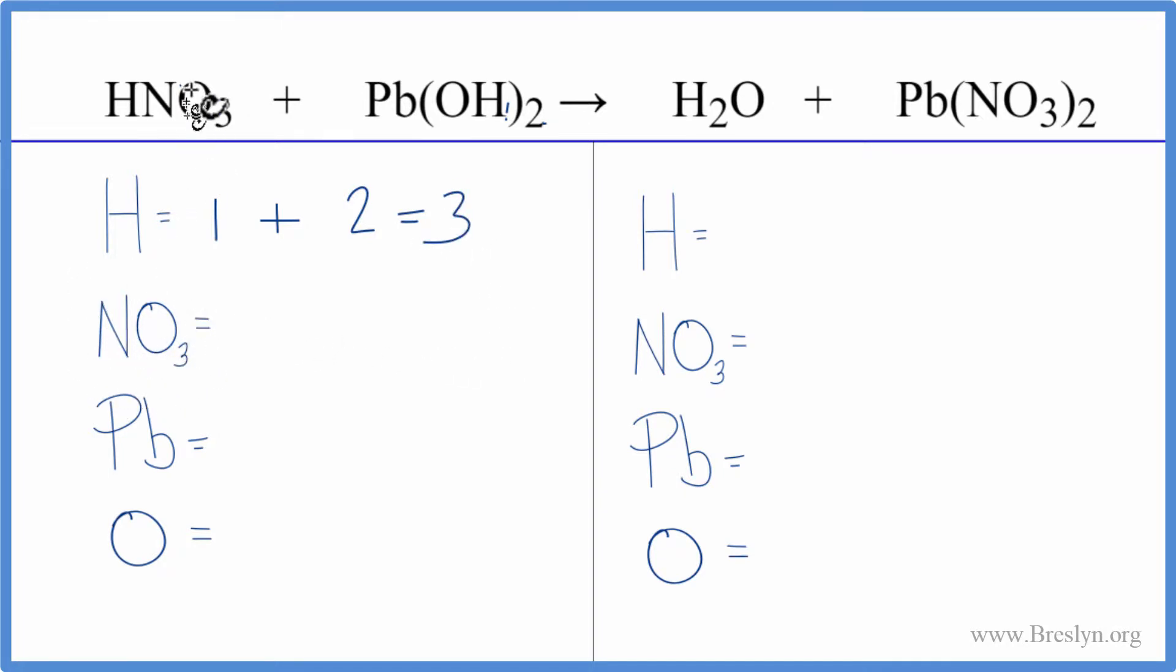This NO3 group, we have NO3 here and we have it here. It's called the nitrate ion. We're going to count that as just one item, and that'll make the balancing easier.